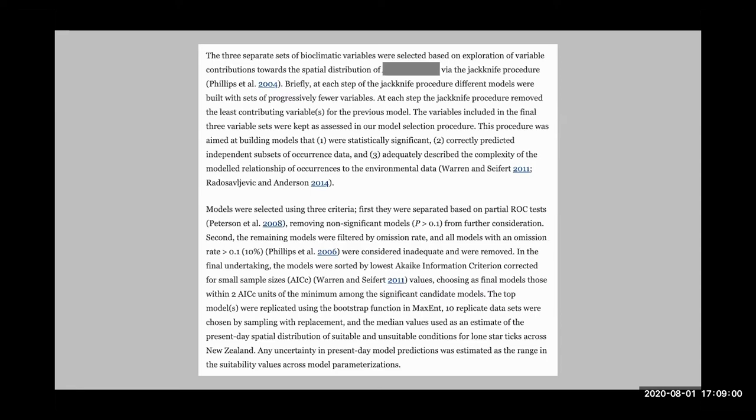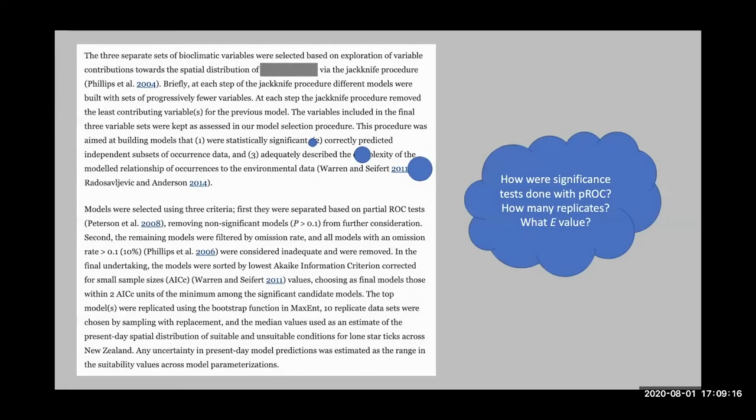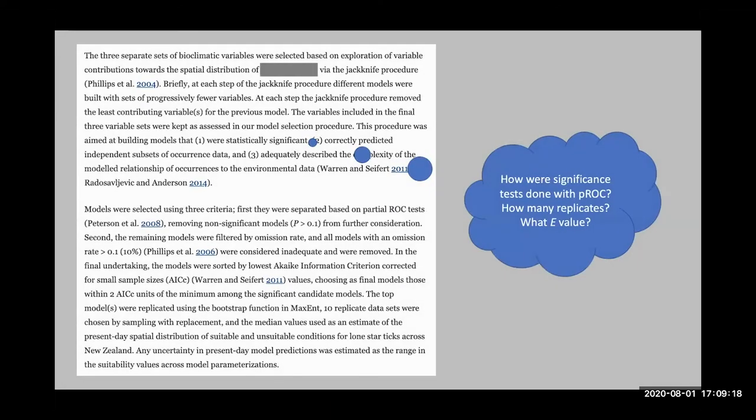Here's another example: 'Three sets of bioclimatic variables were selected; the procedure was aimed at building models that were statistically significant, correctly predicting independent subsets of data, and appropriately non-complex.' Questions arise: how are the significance tests done — with partial ROC? How many replicates were used? What was the value of E? That doesn't appear to be specified.